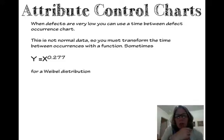Another kind of control chart we can use, if there's very low defects, is we can actually measure the time between defects. In that case, we can use a Weibull distribution. All we're going to do is convert the time between defects, which is the value x, using this Weibull distribution. We bring it to the 0.277, that becomes a y distribution that now is normally distributed. Then we can just go ahead and deal with that like it is a variable associated with the time between defects.